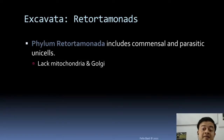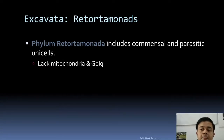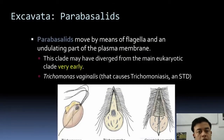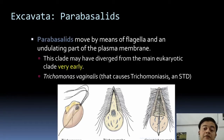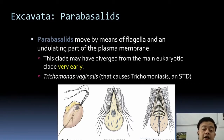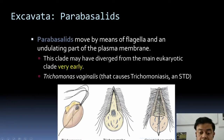Phylum Retortomonas includes commensal and parasitic unicells — commensal means it becomes parasitic only when conditions favor it, otherwise harmless. It lacks mitochondria and Golgi bodies. Parabasalata is another important group of Excavata — they move by means of flagella and an undulating part of the plasma membrane, both contributing to locomotion. This clade may have diverged from the main eukaryotic clade very early. An example is Trichomonas vaginalis, which causes trichomoniasis, a sexually transmitted disease in humans. Other examples include Trichonympha and Spirotrichonympha.